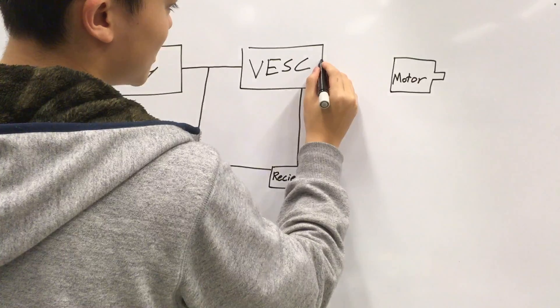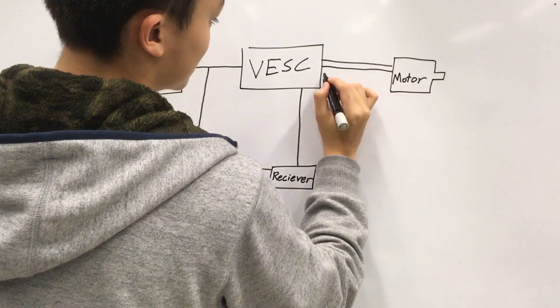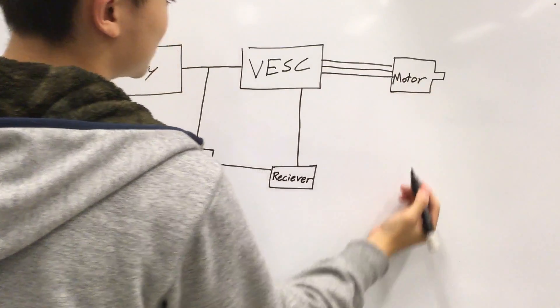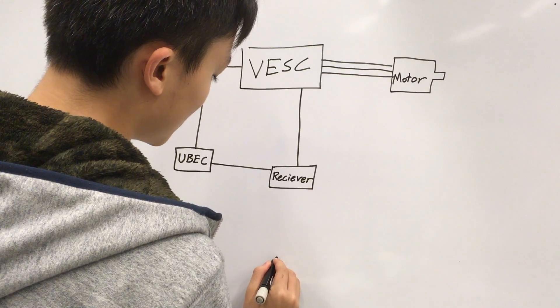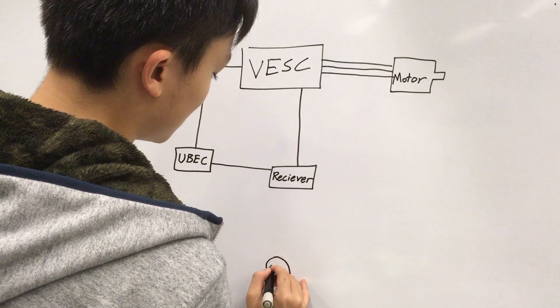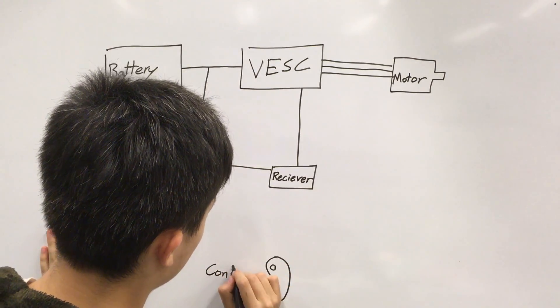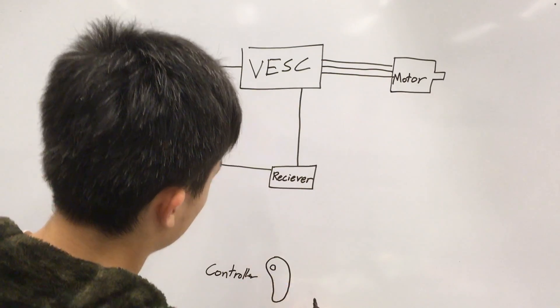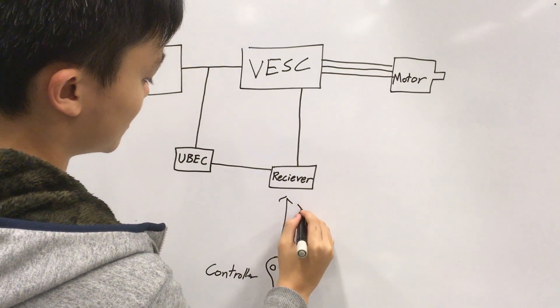Now all I did was just splice a line in the battery so that the U-BEC could be connected onto the battery terminals. Now the U-BEC is connected to the receiver, and your hand holds the controller. So basically for the controller you have a throttle and a brake. Now this is directly sent to the receiver so the receiver can tell the VESC what to do.